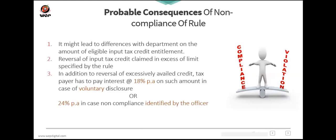Consequences of non-compliance with this rule: it may lead to differences with the department on eligible ITC. If ITC is claimed in excess of the specified limit and you voluntarily disclose it, you are liable to pay 18% per annum interest. However, if the excess claim is identified by a tax officer, you are liable to pay 24% interest per annum.